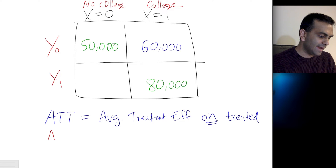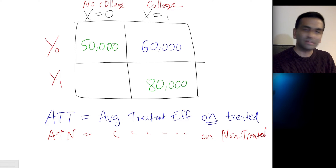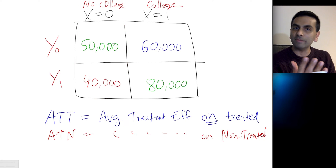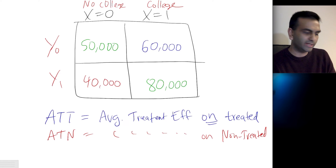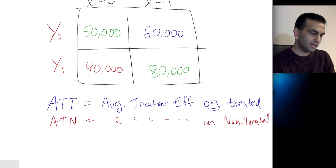On the other hand, the ATN is the average treatment effect on the non-treated. Let's say we peeked behind the curtain — we went back in time, forced the people without college degrees who are making $50,000 to go to college, and observed that their salaries would be $40,000. Because it's a totally different group of people, and treatment effects might not be the same across everybody — college might not have the exact same impact on different people. In this case, the ATN is negative $10,000.